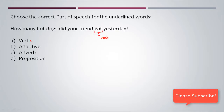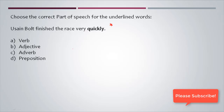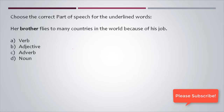Please pause and try by yourself before moving forward. 'Usain Bolt finished the race very quickly' — 'quickly' describes how the action was done; it describes the verb, so the answer is adverb. 'Her brother flies to many countries in the world because of his job' — 'brother' represents the name of a relative or person, so it is a noun.